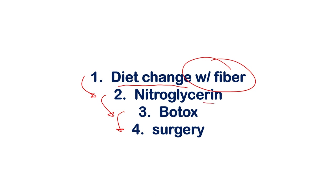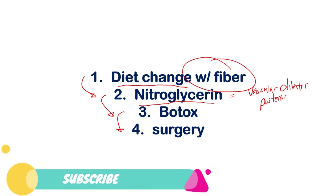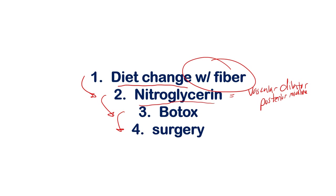If diet doesn't work, you move on to nitroglycerin. The mechanism is that it acts as a vasodilator, dilating blood vessels at the posterior midline of the anoderm. This is because the blood supply at the posterior midline is proven to be very low, making that area vulnerable to ischemia, which increases the prevalence of anal fissures. The vascular dilation from nitroglycerin helps address this.